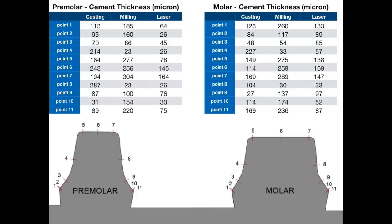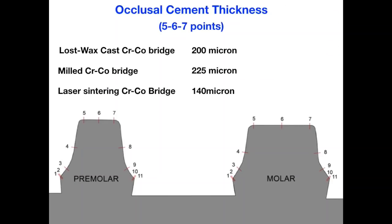These are the measures they obtained at every point for premolar and molar. For a better reading, here is a synthesis. The occlusal cement thickness — corresponding to reference points 5, 6, and 7 on the drawing — was 200 microns for lost wax casting, 225 microns for milled chromium-cobalt, and 140 microns for laser-sintered chromium-cobalt. This is an average between premolar and molar.